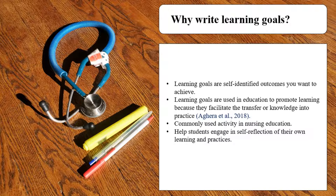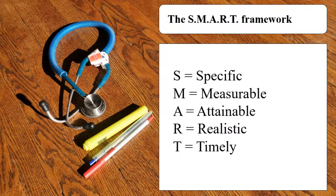Now, the SMART framework itself consists of five letters that make up the word SMART. S is for Specific, M is for Measurable, A is for Attainable or Achievable, R is for Realistic, and T is for Timely.